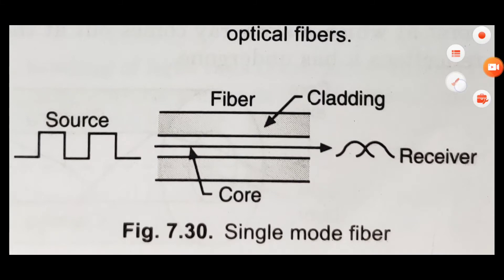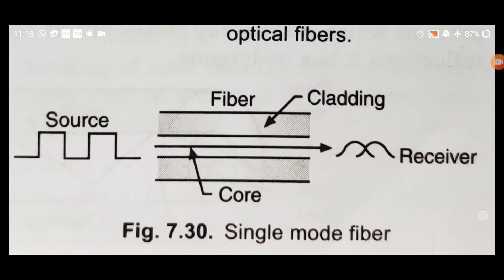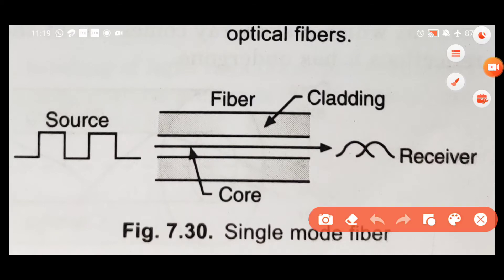In multi-mode fiber, light can travel in a zigzag manner. But in single mode, the critical angle is close to 90 degrees, so light travels in a straight horizontal path. As a result, dispersion and attenuation are very low.